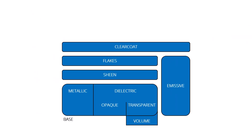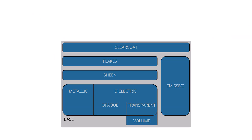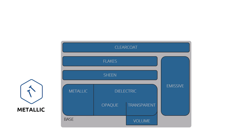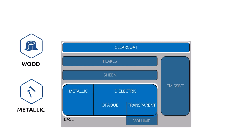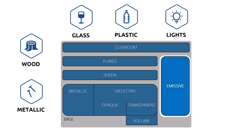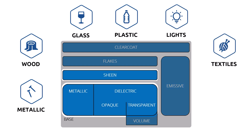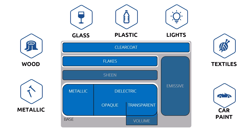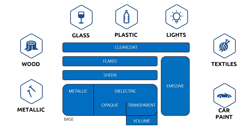Let's look at the full composition of the DSPBR appearance. For example, metallic appearances only cooperate with base elements. Wood uses the base and clear coat elements to represent any waxed or veneered appearances on top of the wood grain. Both glass and plastic appearances use the base elements and volume to ensure and create transparency. Lights utilize the emissive section only. Textiles use both the base and sheen, with more complex appearance types such as car paints utilizing the base, flakes, and coatings.